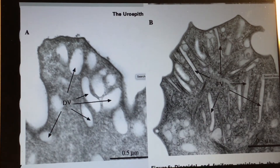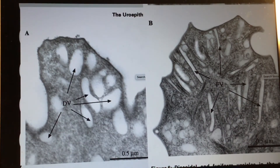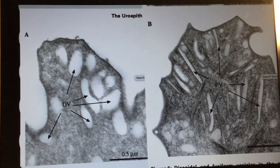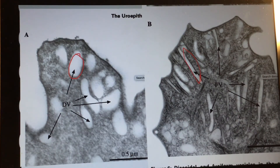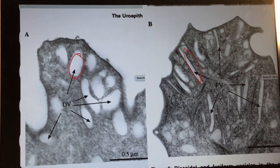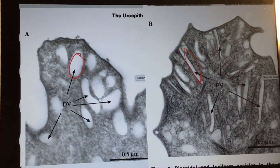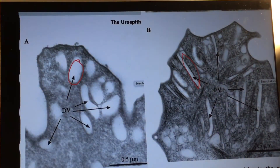Before going into AUM or asymmetrical unit membrane, I'm going to talk about two different types of vesicles that you can find in the umbrella cells of different organisms. You have one wider shape and you have the fusiform vesicle — those are the different types of vesicles found in different organisms in the urothelium.